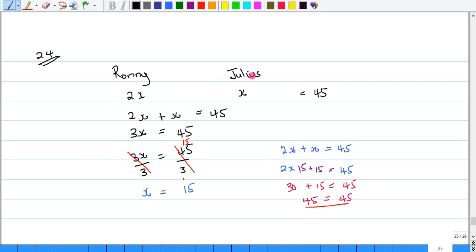So Ronnie and Julius. Ronnie has twice as many as Julius. The sum of their marbles would be 45. So let's rewrite this as 2x plus x is equal to 45. Now, like terms, 2x plus x would give us 3x, 3x being equal to 45.